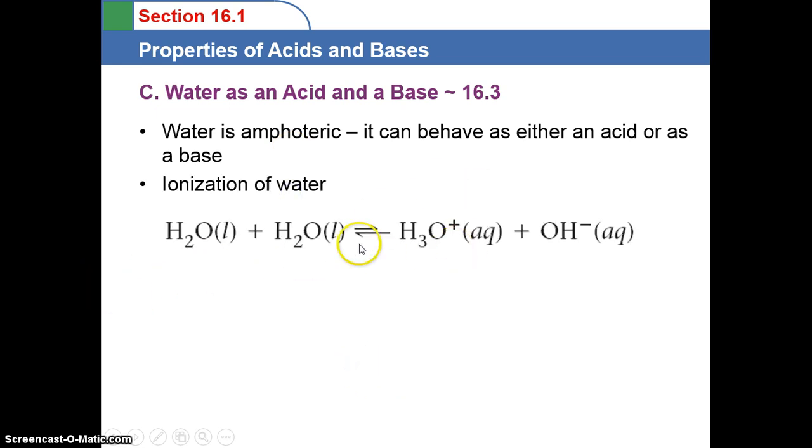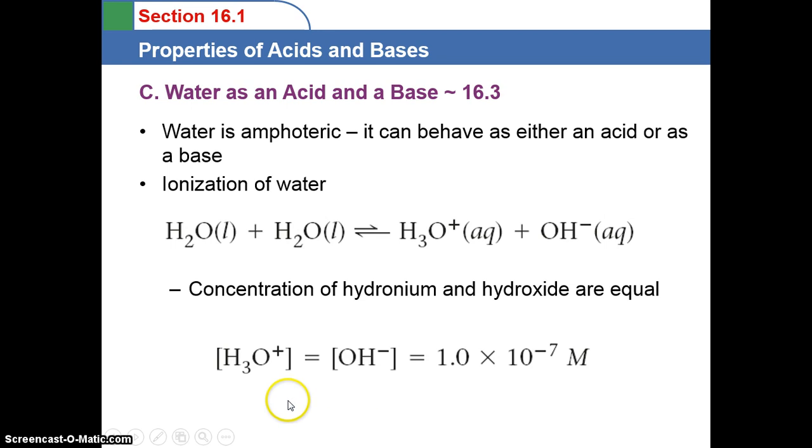When water ionizes, it breaks up into hydronium ions and hydroxide ions. The concentration of hydronium and hydroxide are equal when water ionizes. So the concentration of H3O+ is the same as the concentration of OH-, which is about 1 times 10 to the negative 7th molar. These brackets on the outside mean concentration of.